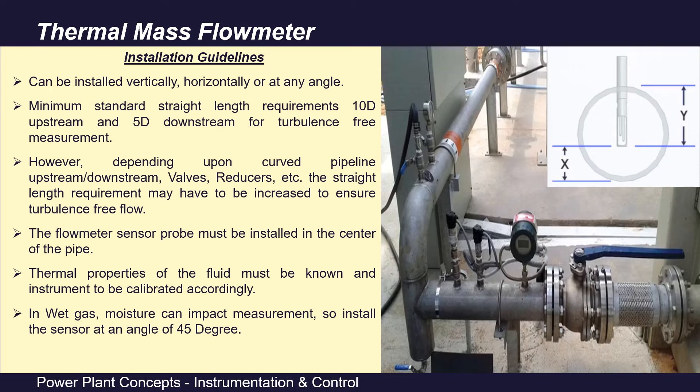That is 10 times the diameter of the pipe upstream straight length requirement, and 5 times the diameter of the pipe downstream of the instrument is required. But suppose if we have a valve, reducer, expander, or bend, in that case we have to see the turbulence effect, and then we may have to increase the straight length requirement to even 20D. Means we have to see what kind of obstruction is there. Then according to that, we have to increase the straight length requirement to make this flow turbulence free.